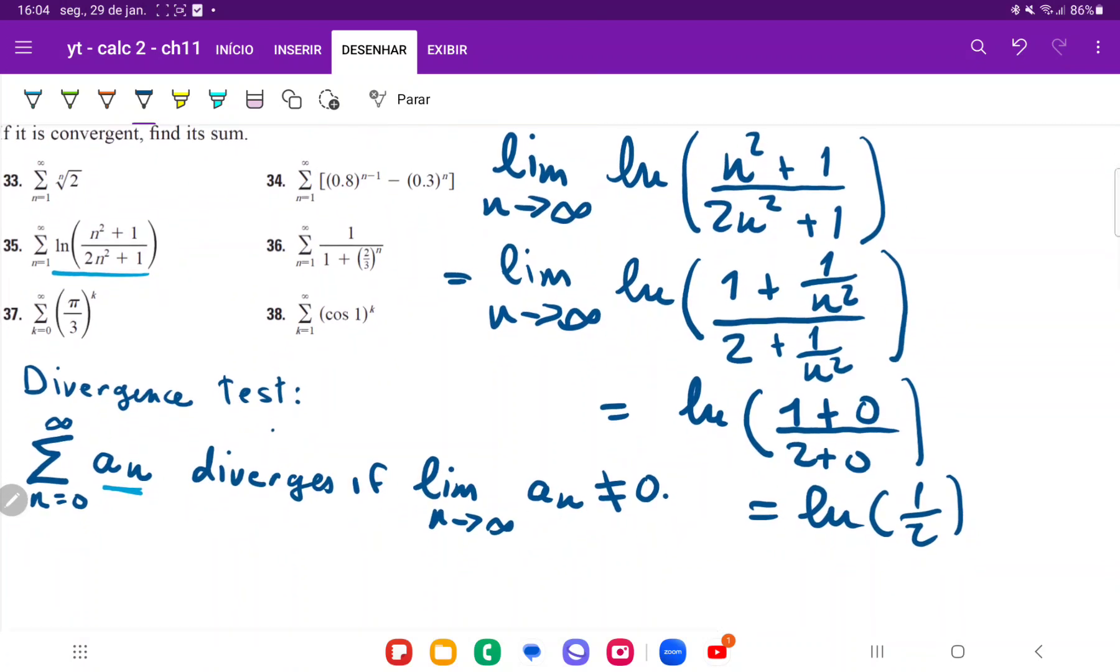Now notice that ln of 1 half is not equal to 0. So we have ln of 1 half is not equal to 0.